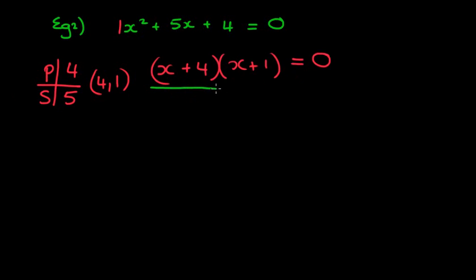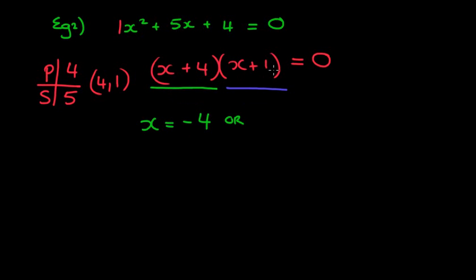We've got two brackets, and multiplying them together equals 0, so one of them must equal 0. If x plus 4 equals 0, then x equals negative 4 — because minus 4 plus 4 is 0. What about x plus 1 equals 0? Then x equals negative 1. Notice the pattern: if it's just an x in the bracket, the answer is the opposite sign of the other number. So x equals negative 4 or negative 1.